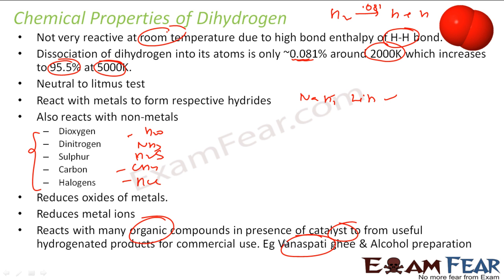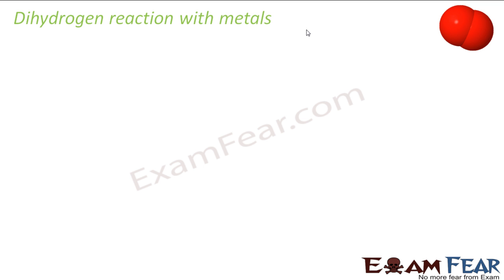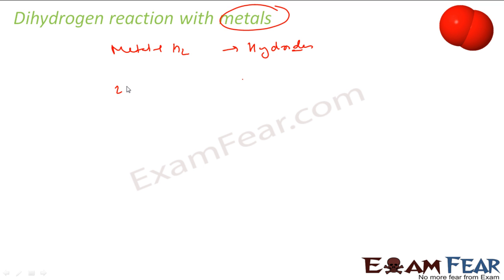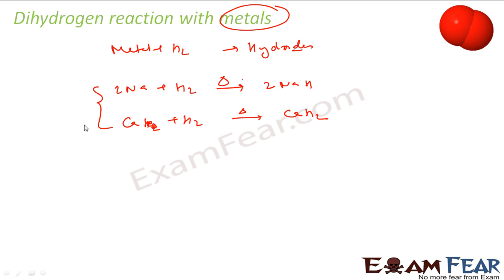For example, the vanaspati ghee which you get is nothing but the process of hydrogenation using a nickel catalyst. Now let's see the reaction of dihydrogen with metals. Sodium plus hydrogen gas, on passing heat, will give you sodium hydride (NaH). Similarly, calcium plus hydrogen on passing heat will give you calcium hydride (CaH₂). This is the reaction of dihydrogen with metals.